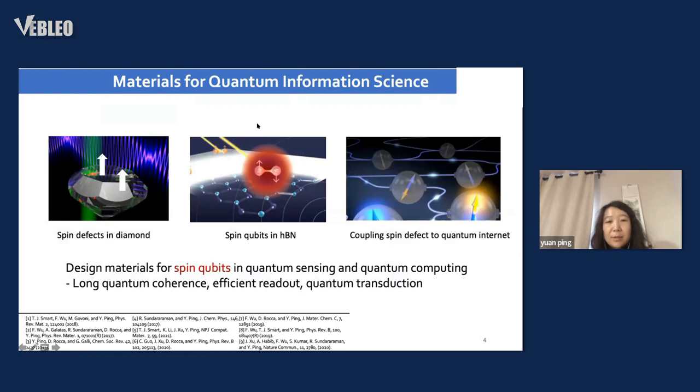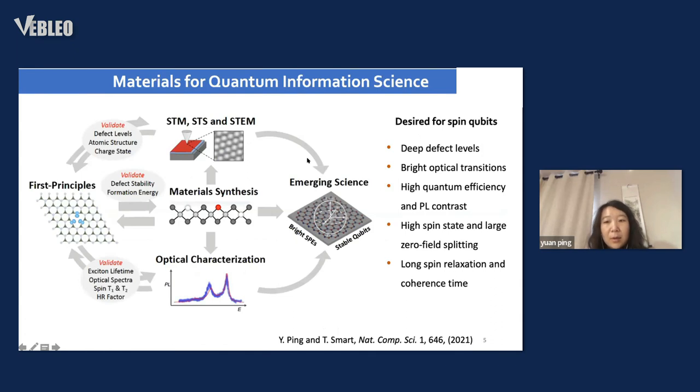A big part of my research is materials for quantum information science. In this area, the candidates for qubits are several. In my group, we mostly focus on spin qubits, for example, spin defects in diamond. More recently, we work on HBN with spin qubits. At the end, you want to couple spin defects to form a quantum network for quantum computing or communication. To realize this, you need long quantum coherence, efficient readout, and quantum transduction.